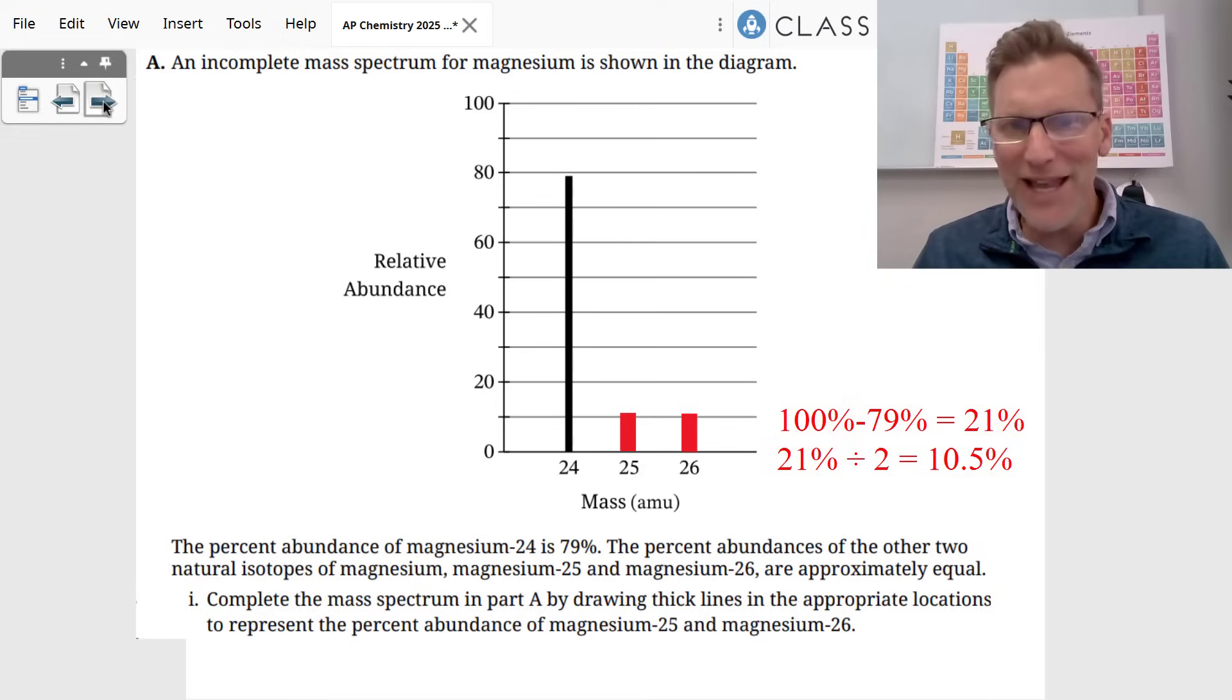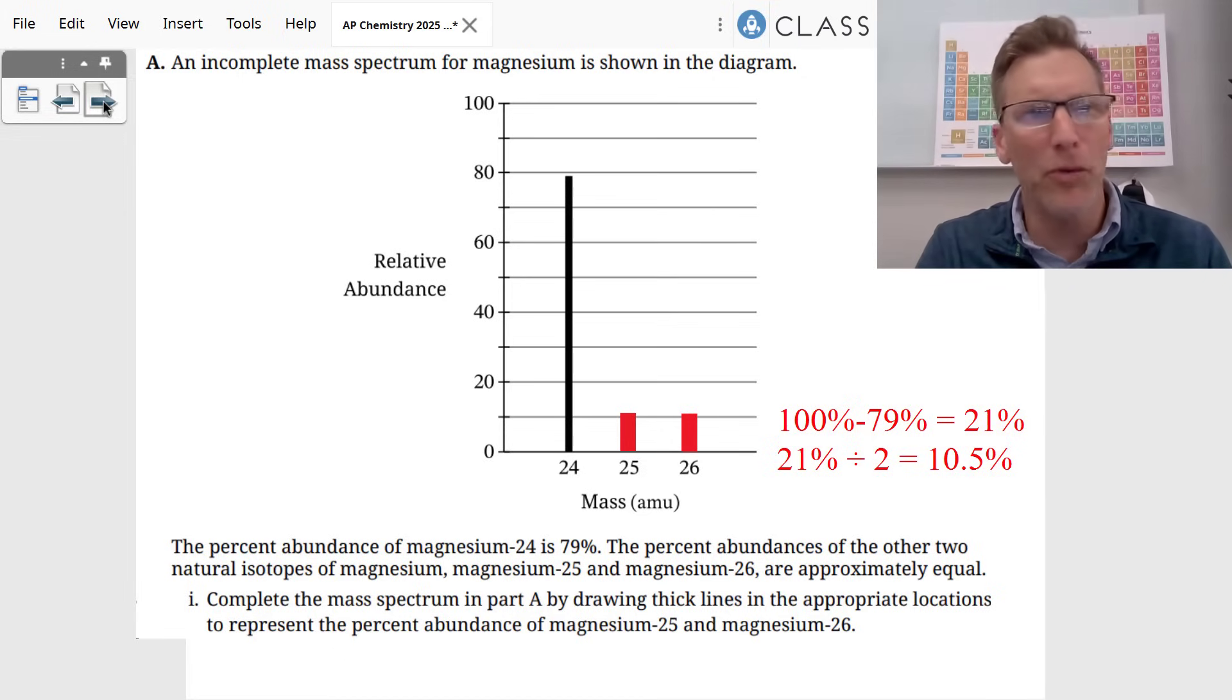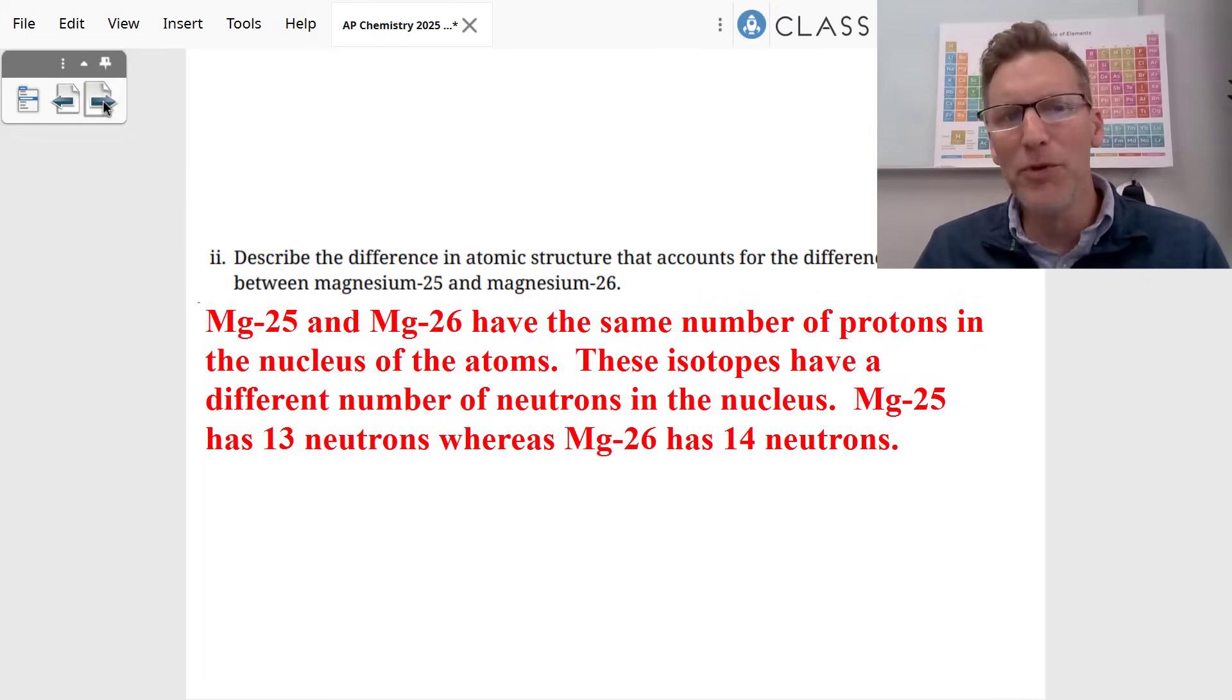It starts off with mass spectroscopy data, and you can see it says that magnesium-24 is 79%. The magnesium-25 and magnesium-26 are approximately equal. So we took 100%, we subtracted 79%, we got 21%, we divided that by two. Each one is 10.5%. And you make those little marks on the mass spectrum, probably worth one point.